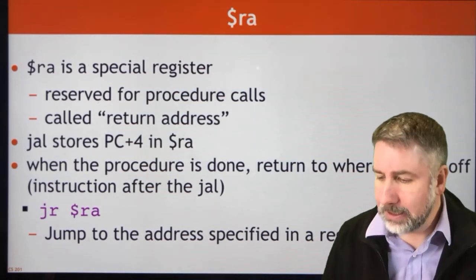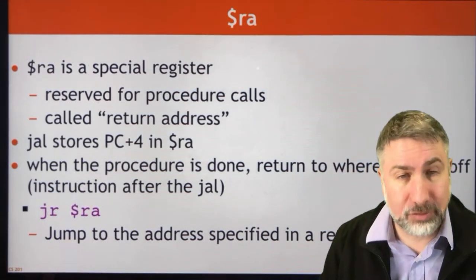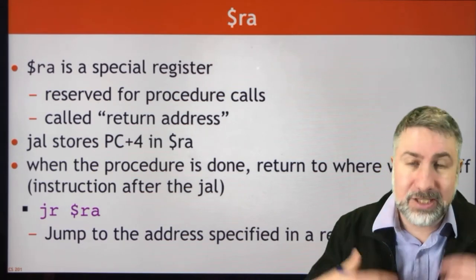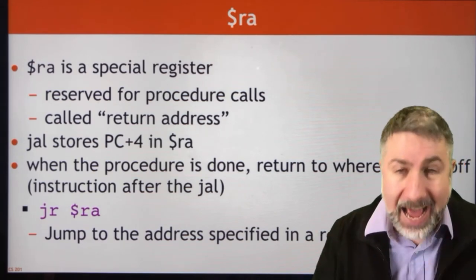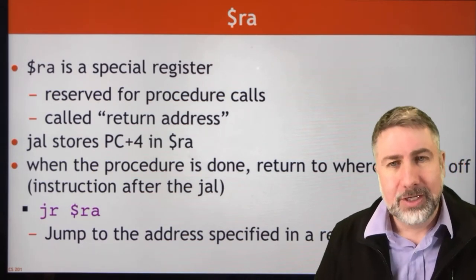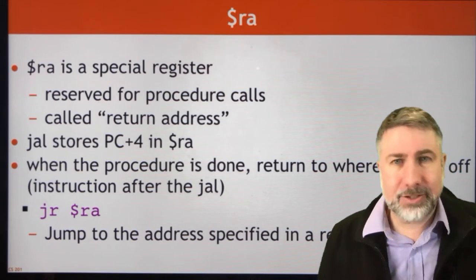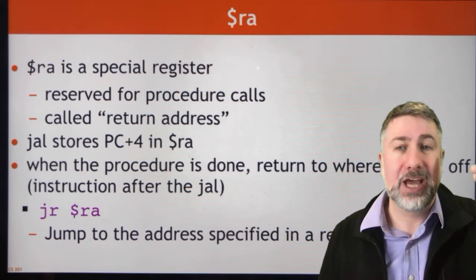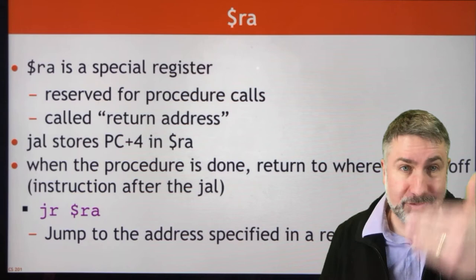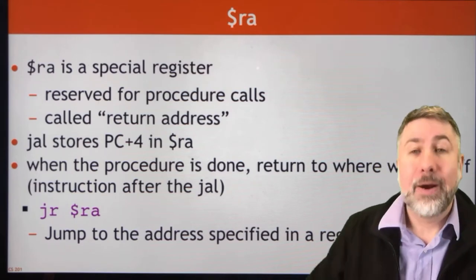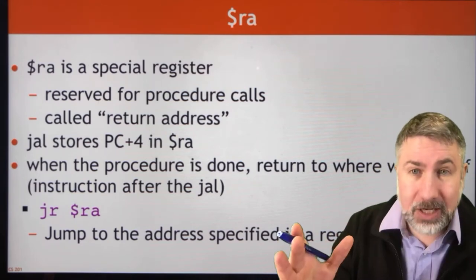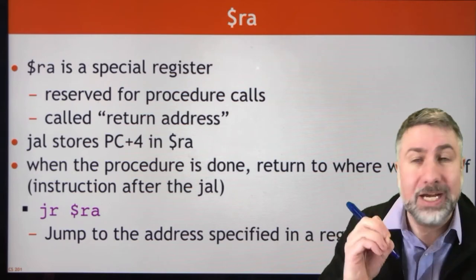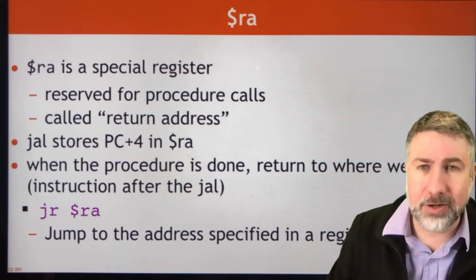Jump and link is going to store PC+4 in the return address. This is the address of the instruction after the jump instruction. You don't want to come back to the jump instruction because you'd just execute the jump instruction again. So you come back to the instruction after the jump instruction. When you're done with the subroutine you're going to use that return address to go back to where you started.